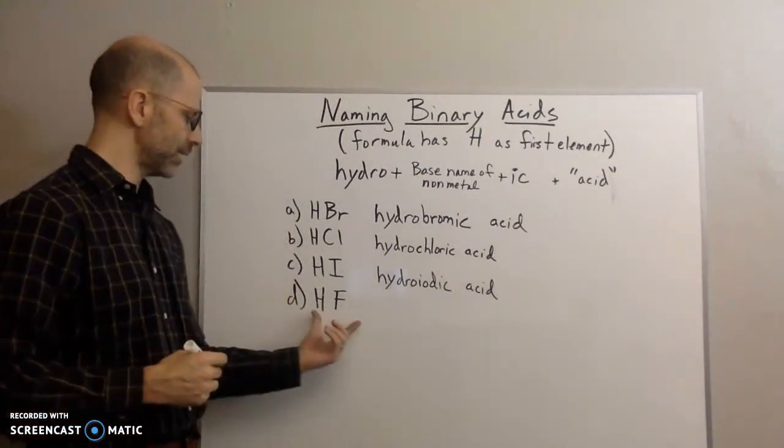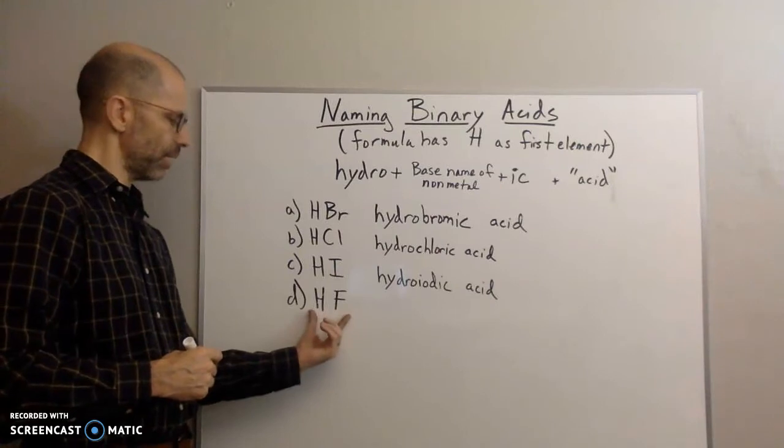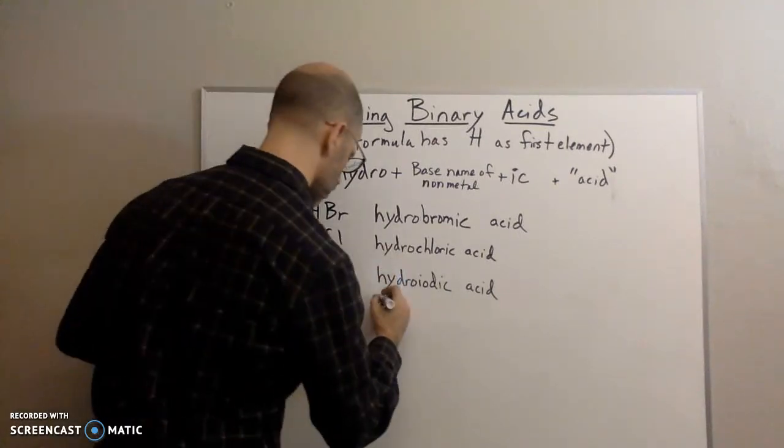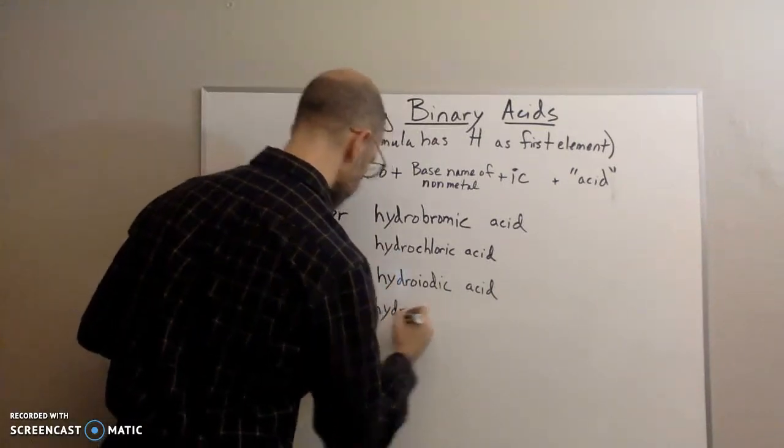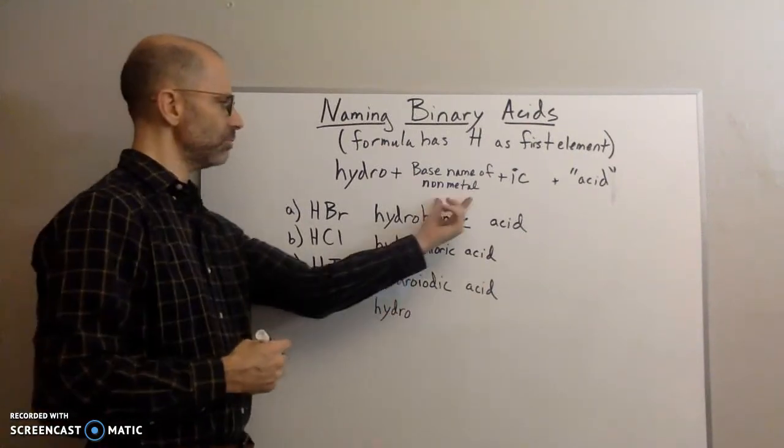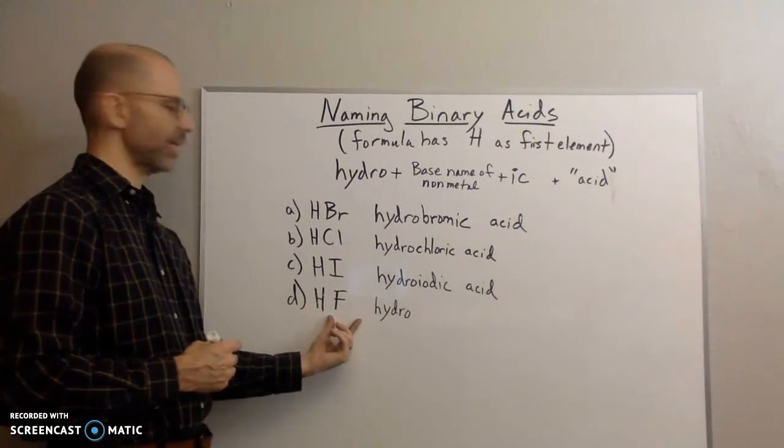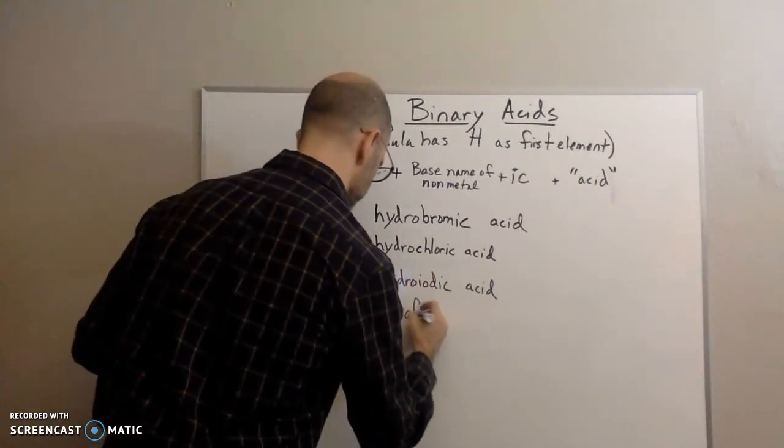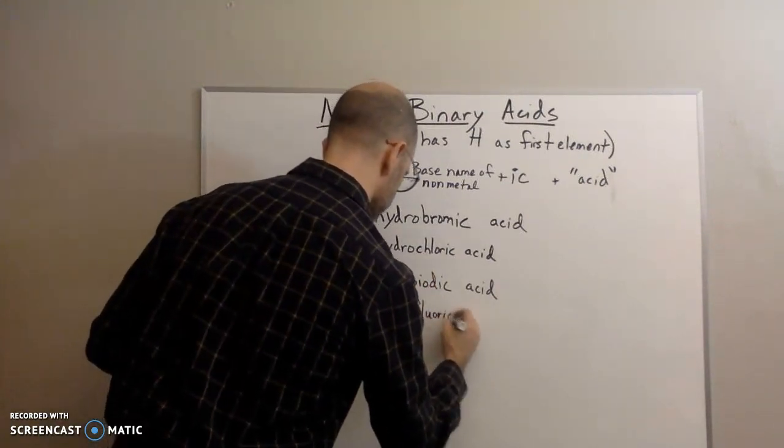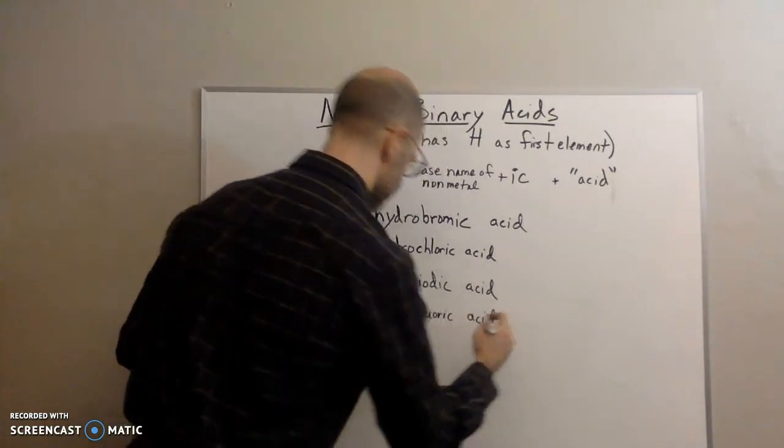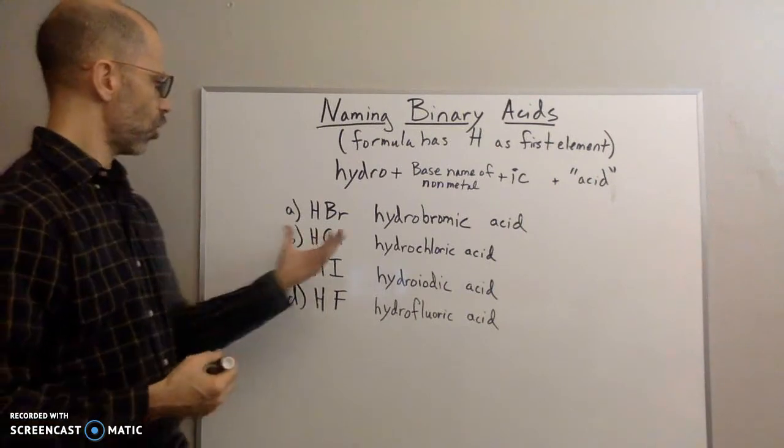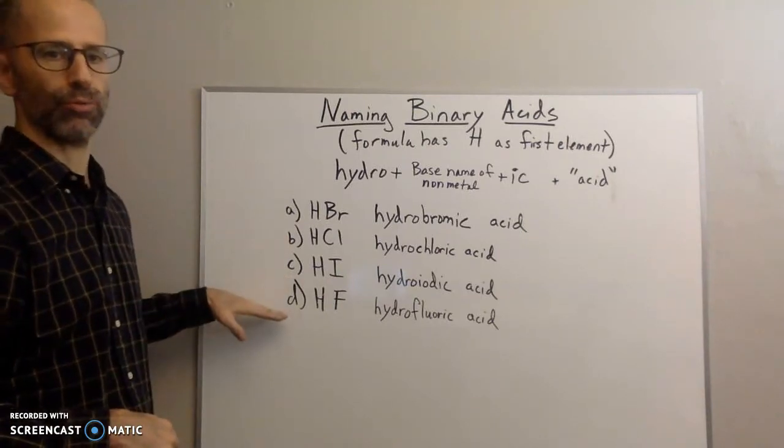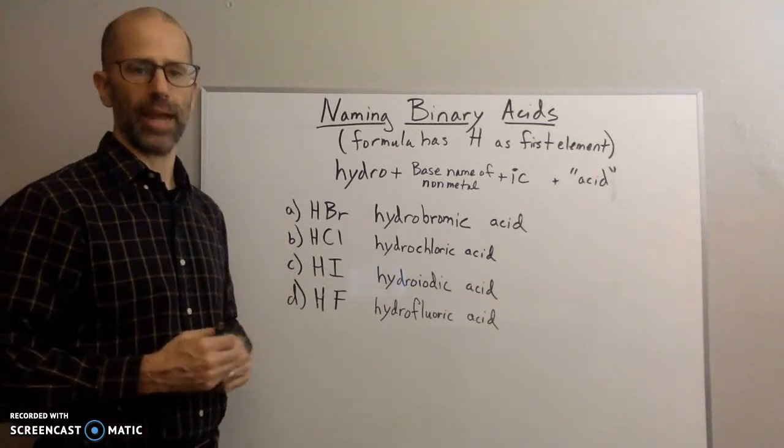And finally, H-F, again, a binary acid. So first element is hydrogen, so hydro. Fluorine is my non-metal, so I'm going to drop the ending, add ick, so fluorine becomes fluoric. So this becomes hydrofluoric acid. So hydrobromic acid, hydrochloric acid, hydro-iodic acid, hydrofluoric acid. And that's how you name the binary acids.